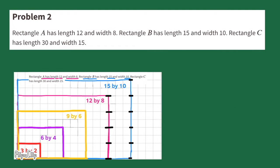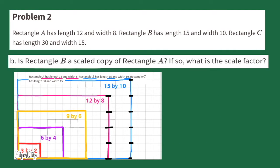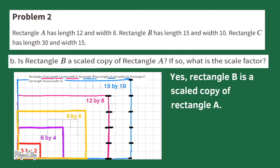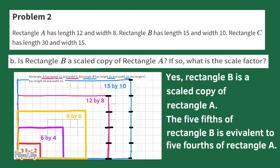Part B: Is Rectangle B a scaled copy of Rectangle A? Rectangle A is the pink rectangle and Rectangle B is the blue rectangle. Yes, Rectangle B is a scaled copy of Rectangle A. The five-fifths of Rectangle B is equivalent to five-fourths of Rectangle A, so the scale factor of Rectangle B is five-fourths.